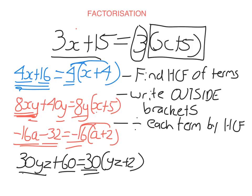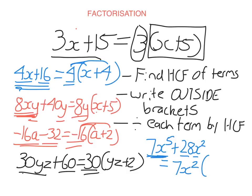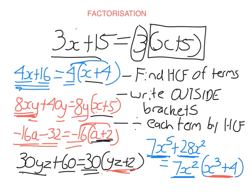Let's try 30yz plus 60. The HCF of 30 and 60 is 30 — there are no letters in common — so I get 30 times (yz plus 2). The last one involves powers: 7x to the power of 5 plus 28x squared. The HCF of 7 and 28 is 7. For the letters, I take out the variable with the lowest power, x squared. Inside: 7x to the 5 divided by 7x squared is x cubed, and 28x squared divided by 7x squared is 4. So the answer is 7x squared times (x cubed plus 4). When you're finished, the things in the bracket should have no common factor — x cubed and 4 have none, so you know you've done something right.